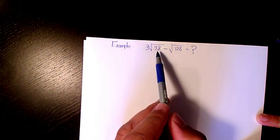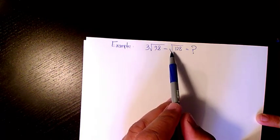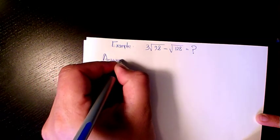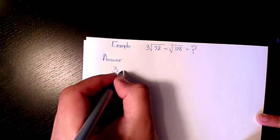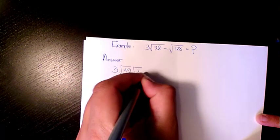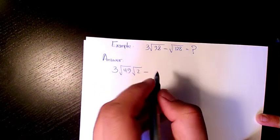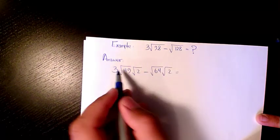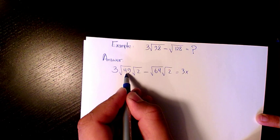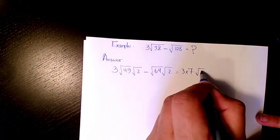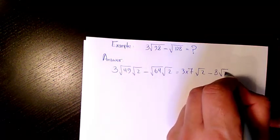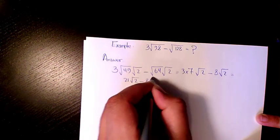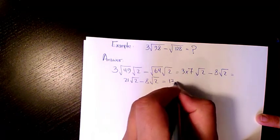First one is 3√98 - √128. The answer is 3√49 × √2 - 128 is 64 × 2. So 3 square root of 49 is 7, square root of 64 is 8√2. That makes it 21√2 - 8√2, that makes it 13√2.